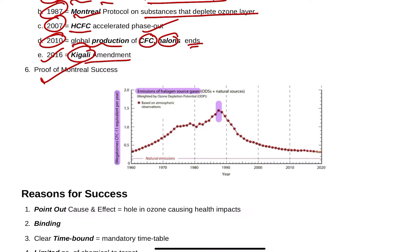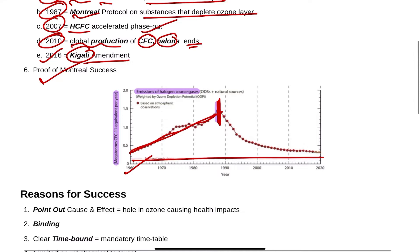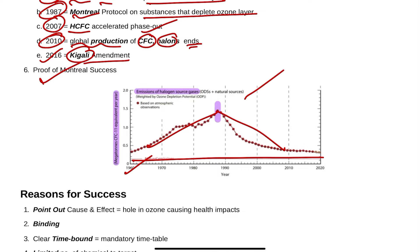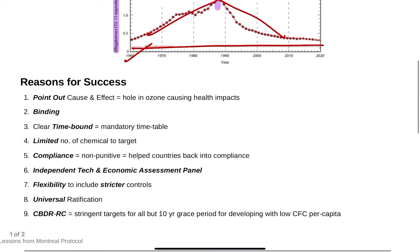As proof of Montreal's success: looking at halogen ozone-depleting substances, natural emissions remained constant, but industrial emissions increased because of industrialization. The watershed moment is where the Montreal Protocol happened — after that, everything reduced. This graph is the proof of that success.